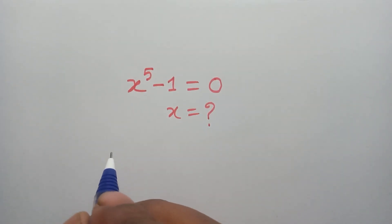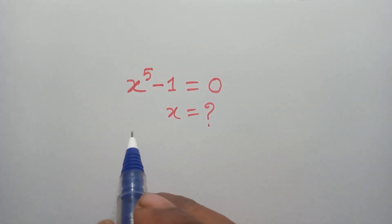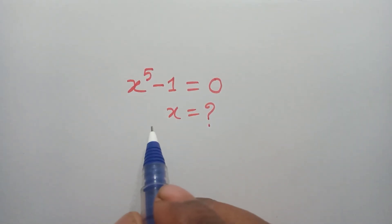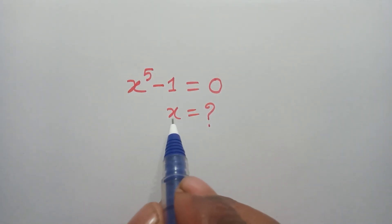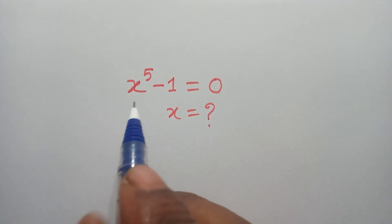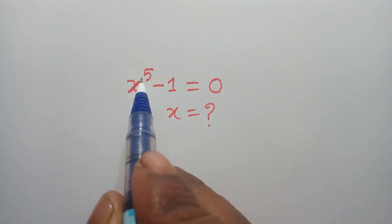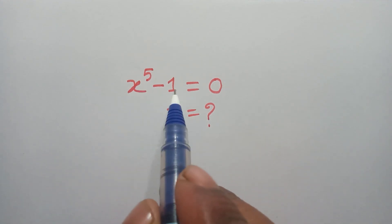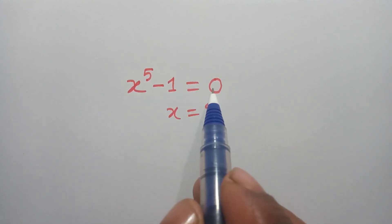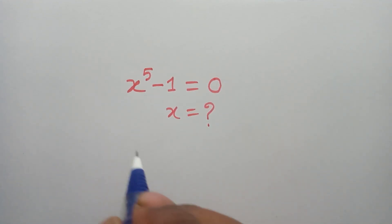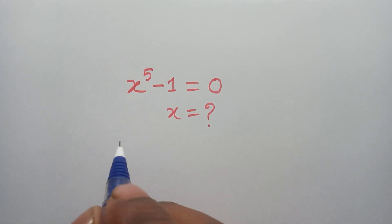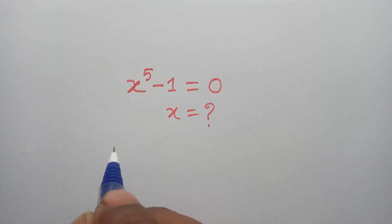Hello everyone, welcome back to my channel. In this video, I am going to show how to find the value of x, where x to the power 5 minus 1 is equal to 0. So let's try to solve this equation.